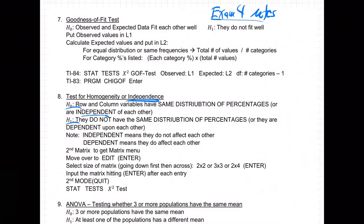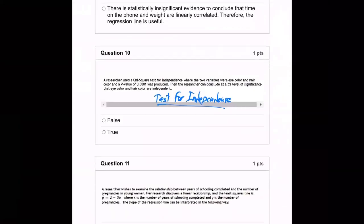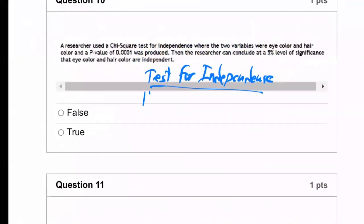H0 is independent, H1 is dependent. Let's write that out for us. So H0 is independent, H1 is dependent.